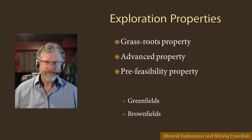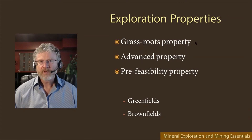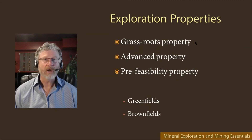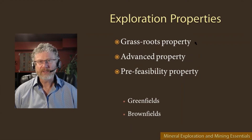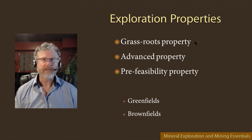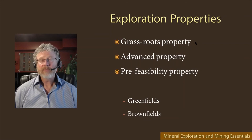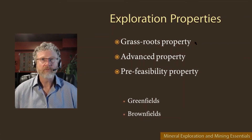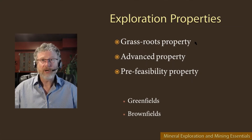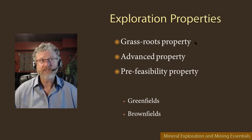There are different types of properties. The first is a grassroots property — an early-stage property where a company is primarily focused on trying to make a new discovery. Usually there isn't a mineral deposit that has been discovered or identified, though there may be known mineralization — areas of copper or gold, maybe even some drill holes with elevated metals — but a defined mineral deposit hasn't been established. The aim on a grassroots property is to discover new deposits or work on initial discoveries and prove them into something more significant.